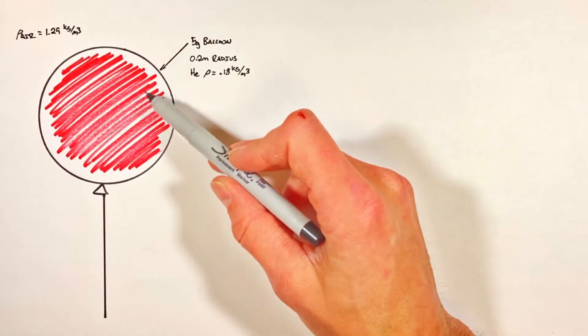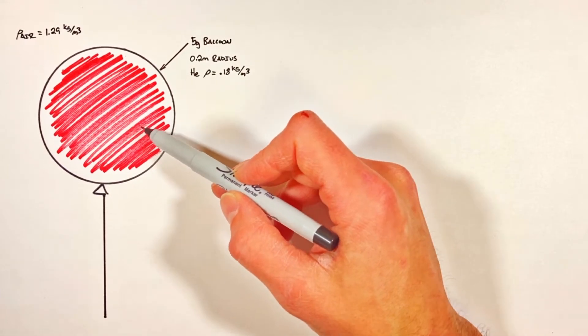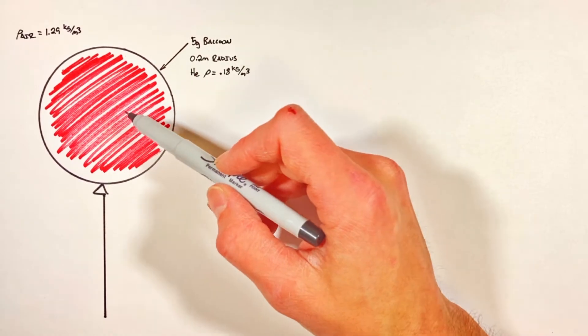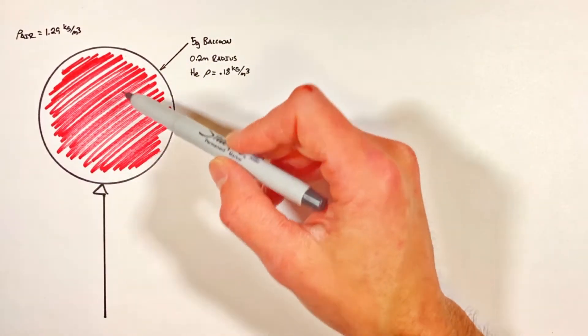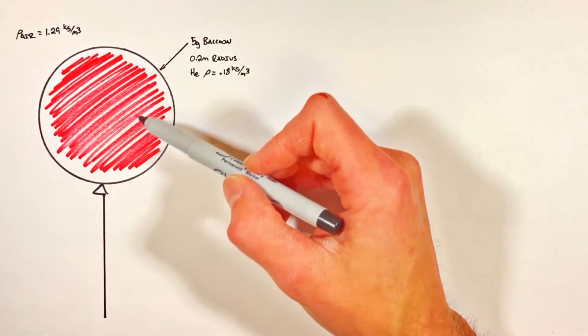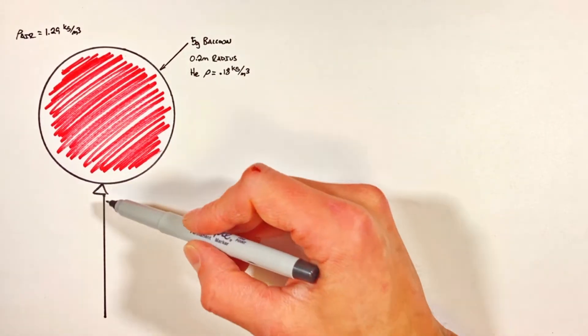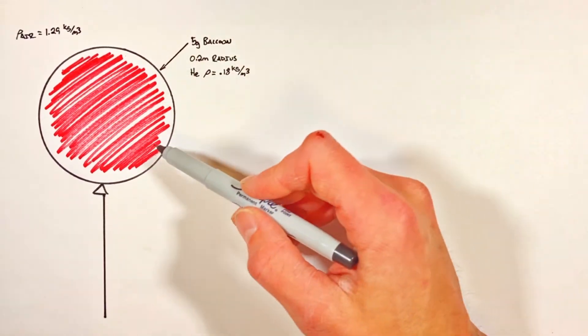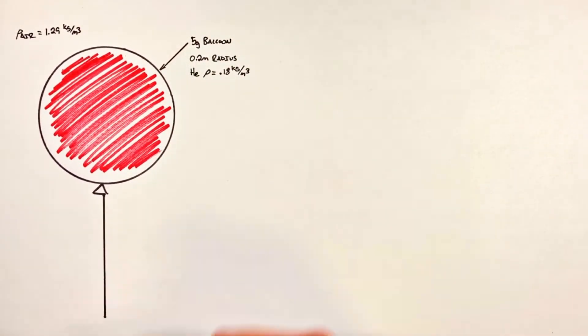Today we're going to take a look at a balloon, which is red and filled with helium. Because it's filled with helium, it's less dense than the air around it and is trying to float away. In this problem, we're going to solve for the tension in the string required to keep the balloon from drifting off.